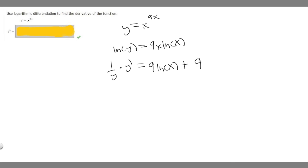So now that we have this, what we want to do is get the y prime by itself. So what we need to do is multiply both sides by y. That'll cancel this right here. So we'll have y prime is equal to y times 9 of the ln of x plus 9. So what is y though? Well, we know that y is equal to x raised to the 9x. So instead of y, what we're going to want to do is just write x to the 9x. So we have y prime is equal to x to the 9x times 9 times the ln of x plus 9. So this is going to be the derivative of this function.